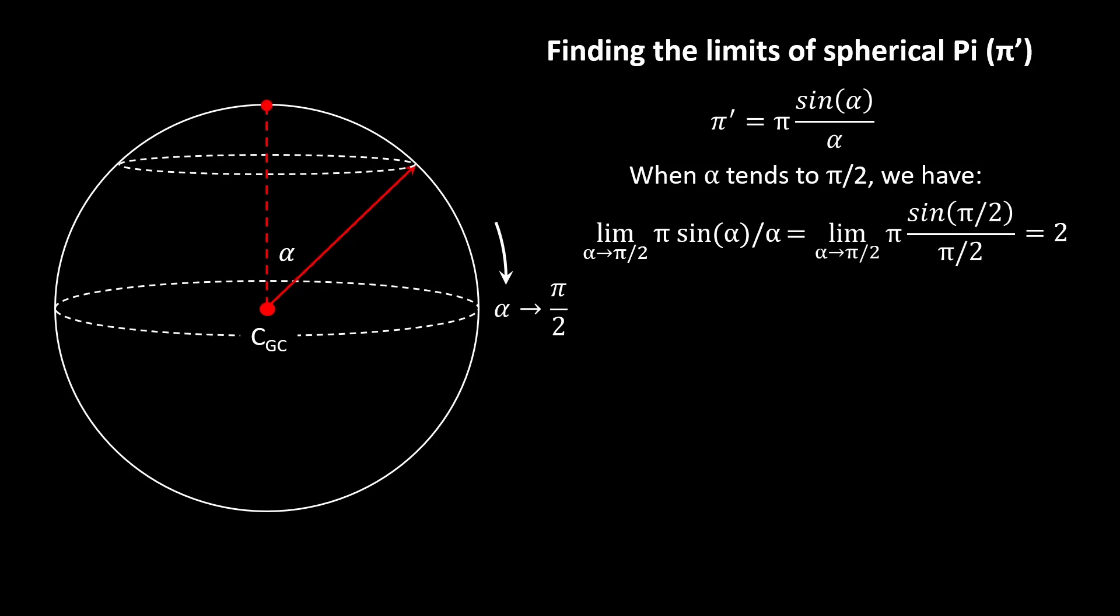But now, what happens if we draw the smallest circle we possibly can? What happens when α tends to zero? Well, in that case, the limit as α tends to zero of π sin(α)/α...